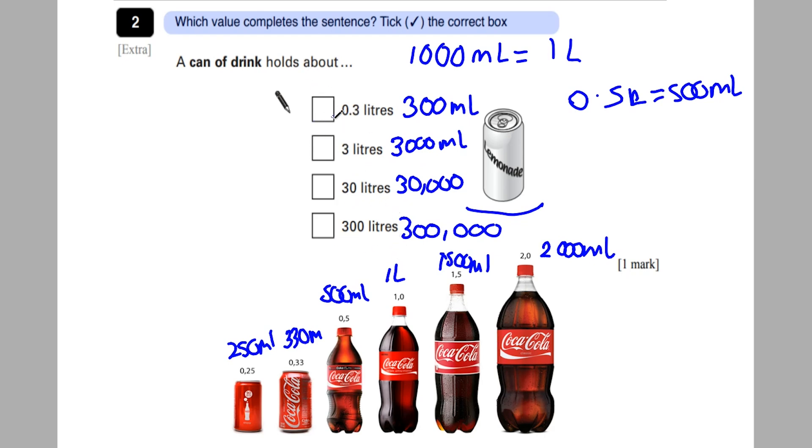So the estimate answer here would be this one because it's 300 millilitres and a can of drink actually holds 330 millilitres. So it's very close to the actual amount. So this one here would be the correct answer.